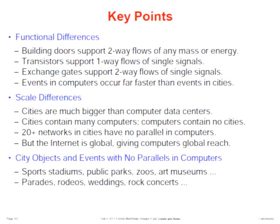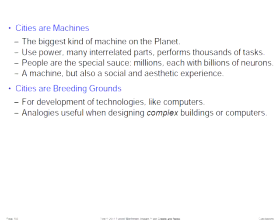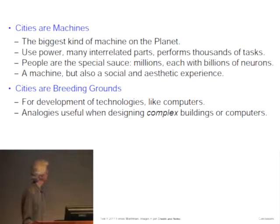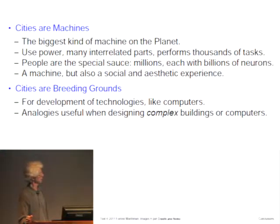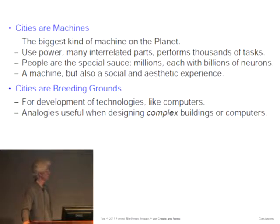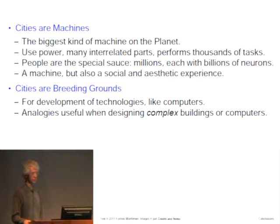There are lots of objects and events in cities that have no parallels in computers — what's the computer equivalent of a rodeo or a zoo? Cities are machines, the biggest kind of machine on the planet. The classic definition of a machine is that it uses power, has many interrelated parts, and performs a task — but cities perform thousands of tasks, not just one. People are the special sauce: there are millions of them in cities, each with billions of neurons in their brain. While the city is a machine, it is of course also a social and aesthetic experience. Cities are breeding grounds for the development of technologies like computers.